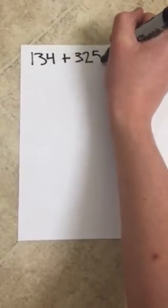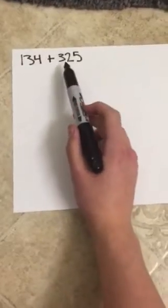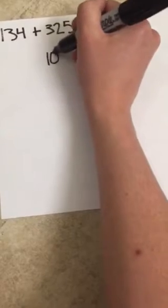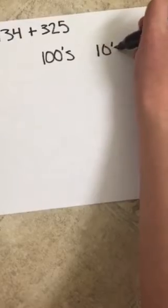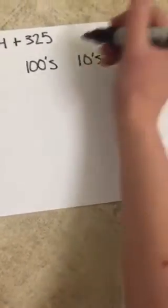So let's say our problem for today is 134 plus 325. And the first thing you want to do with the chip abacus is begin by labeling your place values. And we can see in 134 and 325 that they only have three place values: the 100s place, the 10s place, and the 1s place. And then you're gonna want to draw a line separating those.